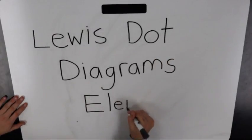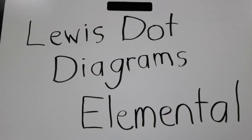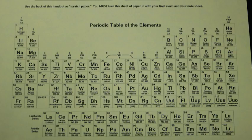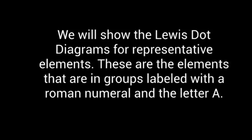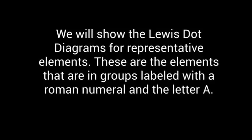In this video we're going to show you how to draw Lewis dot diagrams for elements. To do this you will need a visual of the periodic table. First find your element on the periodic table, then find what representative group the element is in. Look for the number at the top of the column — it should be in Roman numerals with a capital A at the end. This number represents how many electrons are on the outermost energy level.